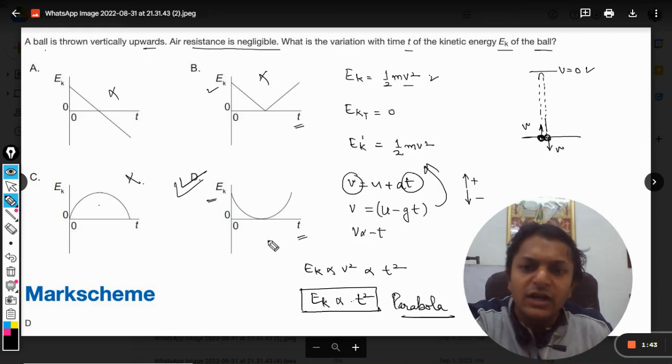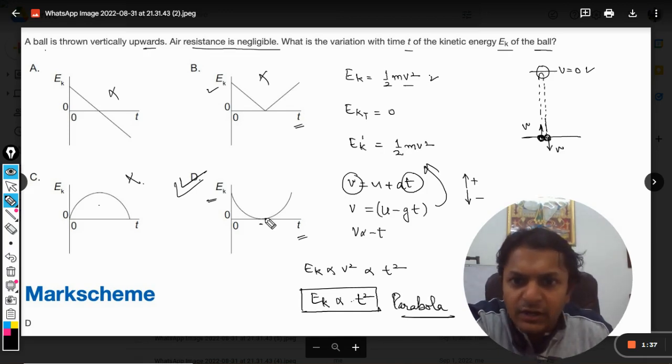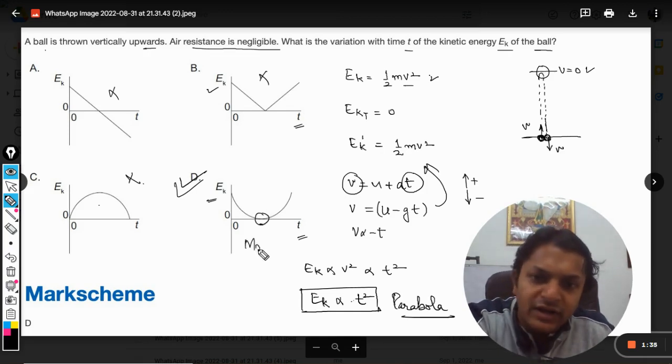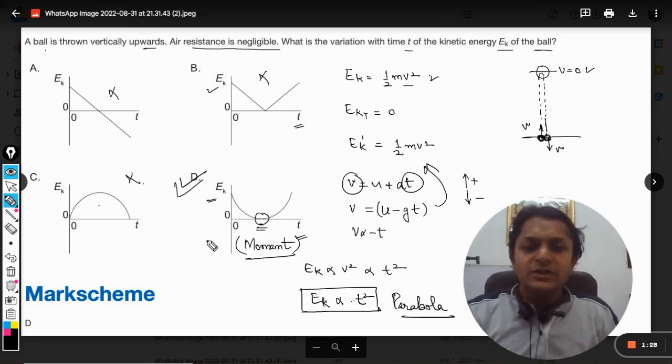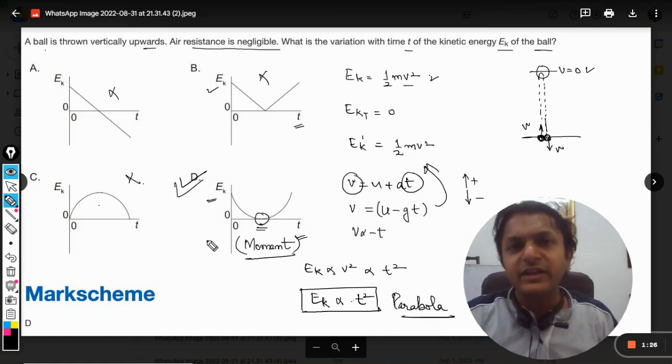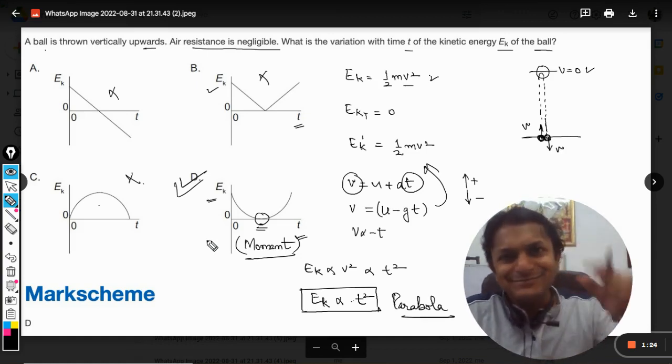So D is the correct answer and the parabola will be like this because when it reaches at this point the kinetic energy becomes zero momentarily, basically for one particular moment the kinetic energy becomes zero. So with this I think the concepts will be very clear. All the best, bye.